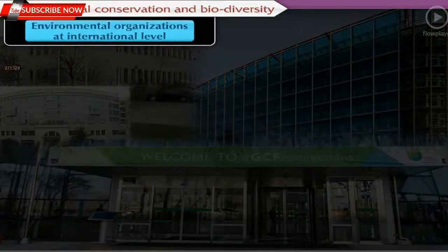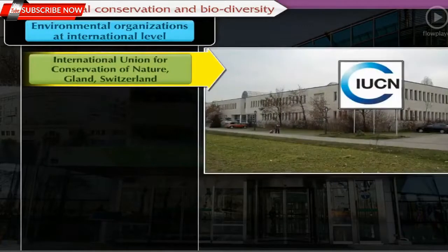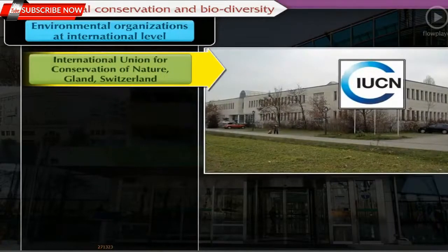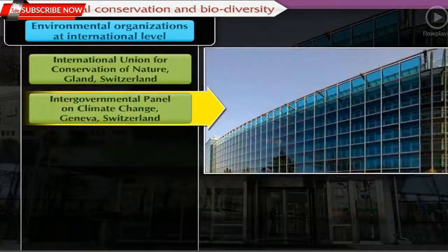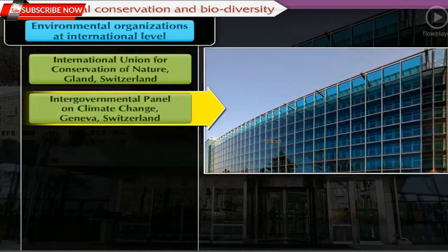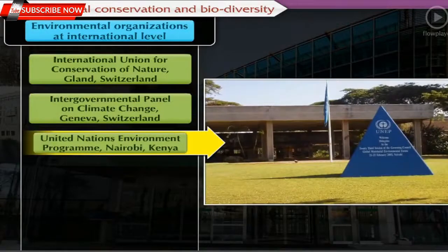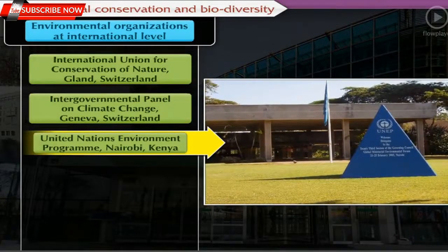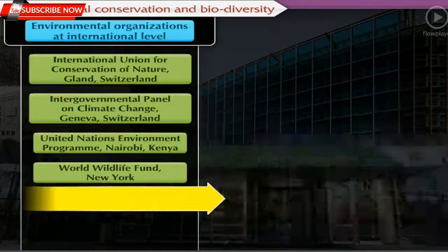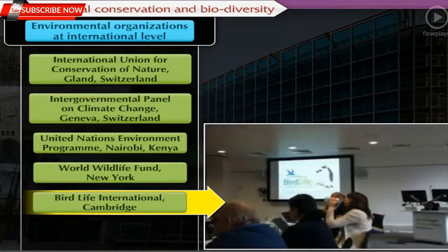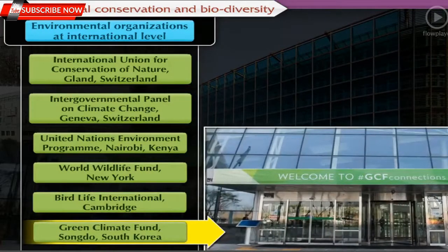Environmental organizations at the international level include: International Union for Conservation of Nature (IUCN), Gland, Switzerland; Intergovernmental Panel on Climate Change, Geneva, Switzerland; United Nations Environment Program, Nairobi, Kenya; World Fund, New York; Bird Life International, Cambridge; and Green Climate Fund, Songdo, South Korea.